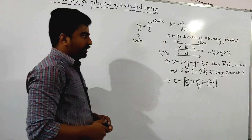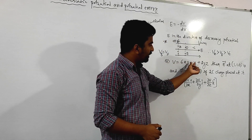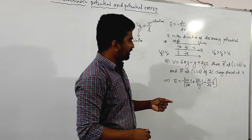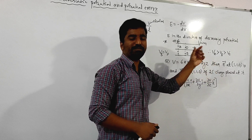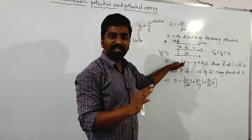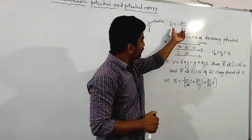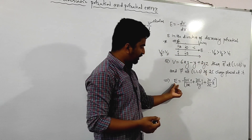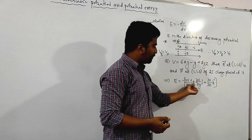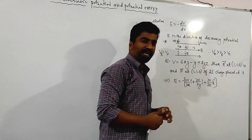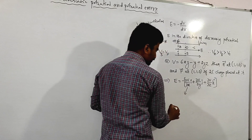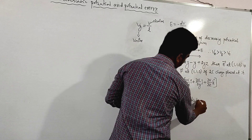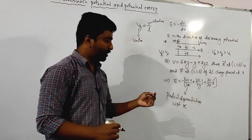Next question: the potential V equals 6xy minus y plus 2yz. What is the electric field at point (1, 1, 0)? This is an important exam problem. The method: place two charges at this point so the force can be experienced. The easy method is to use E = minus dV/dr.